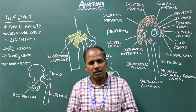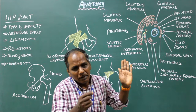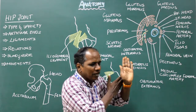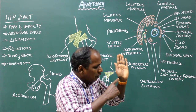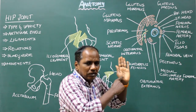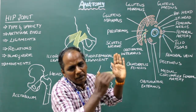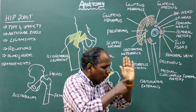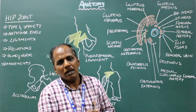Aspiration of the hip joint is done by inserting the needle from the anterior aspect, directed medially, upwards, and backwards, just 5 cm below the anterior superior iliac spine.